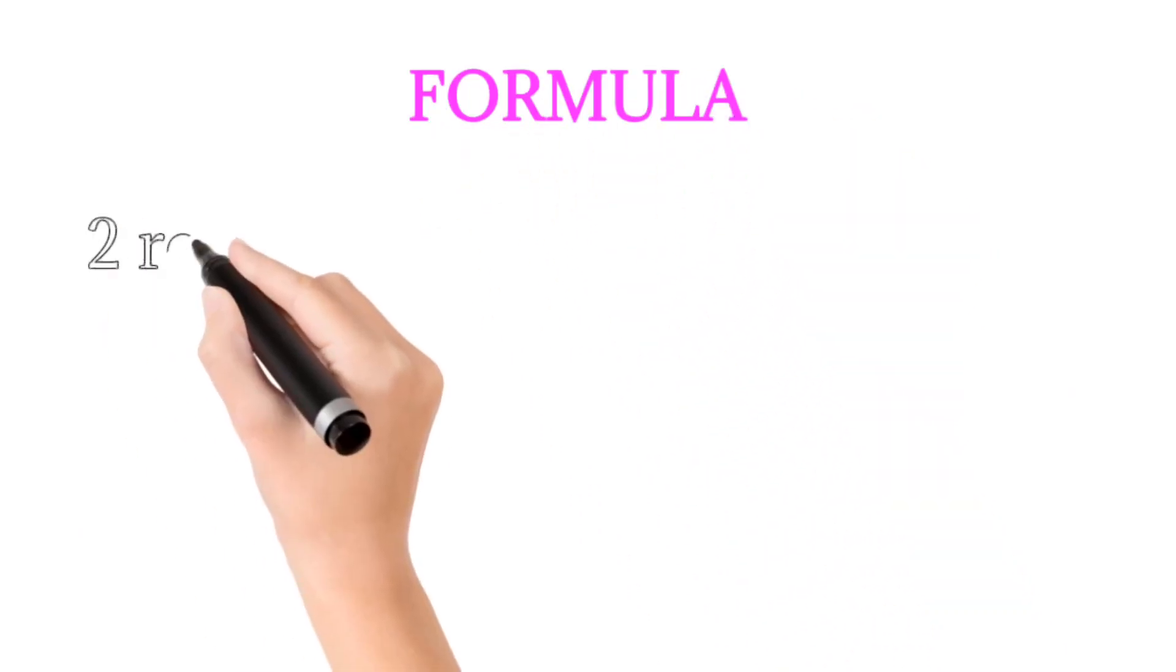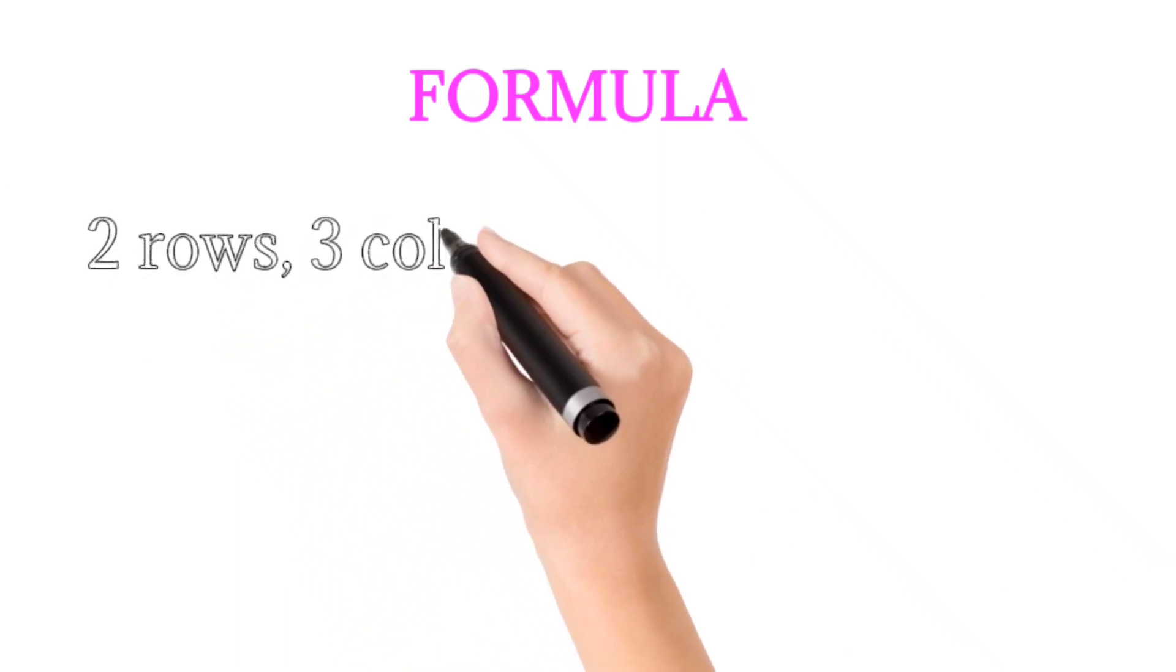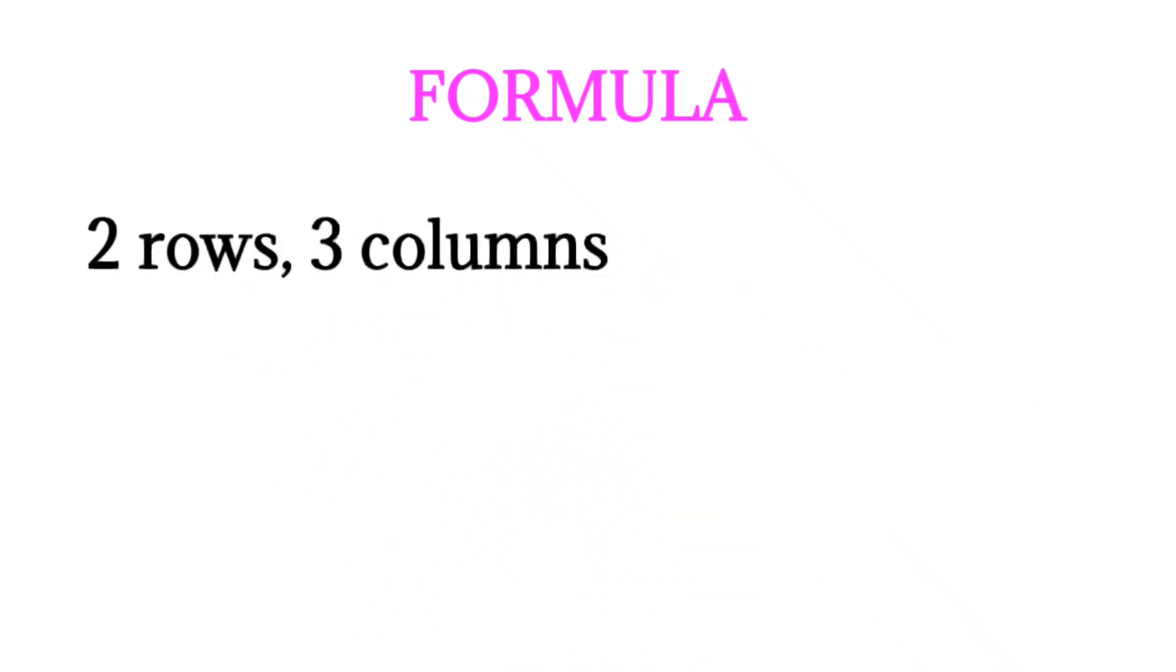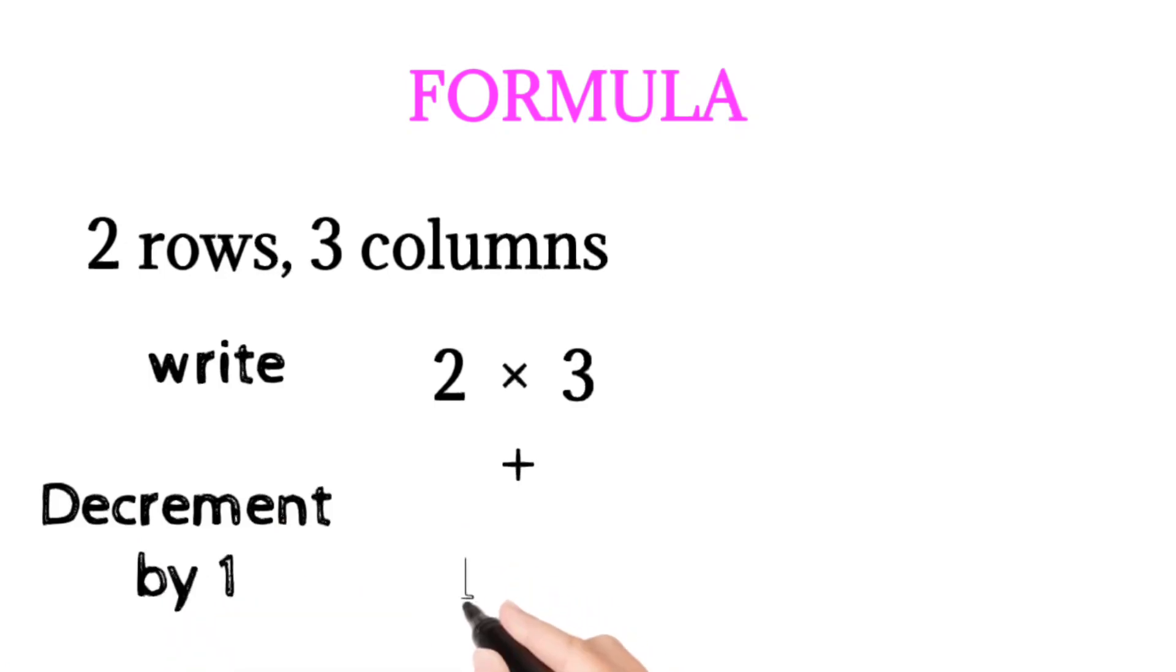Now let us use the formula to find the number of squares. So I have 2 rows and 3 columns. Then you have to use this formula: write 2 into 3, 2 rows 3 columns, then decrement each number by 1. So 2 becomes 1 and 3 becomes 2.